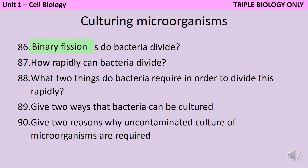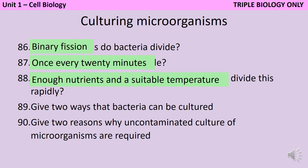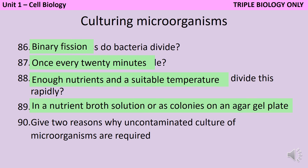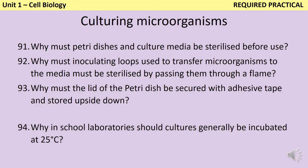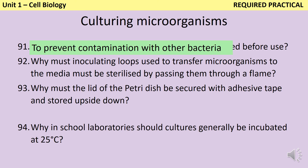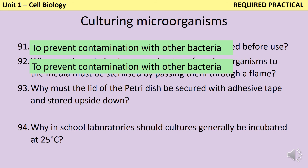Bacteria divide by a process called binary fission, and this can happen as rapidly as every 20 minutes, provided they have sufficient nutrients and a suitable temperature. Bacteria can be cultured either in liquid — in a nutrient broth — or on agar plates. Uncontaminated cultures of microorganisms are necessary for investigating the action of disinfectants and antibiotics. In all stages of the required practical, it's important to avoid contaminating your cultures with other bacteria from the environment. Before you begin, sterilise your petri dishes and culture media. Sterilise your inoculating loop to avoid contamination. Then tape down the lid of your petri dish to avoid contamination from external bacteria and to prevent your bacteria getting out. Store your plates upside down because condensation will form and you don't want it forming on your culture media.